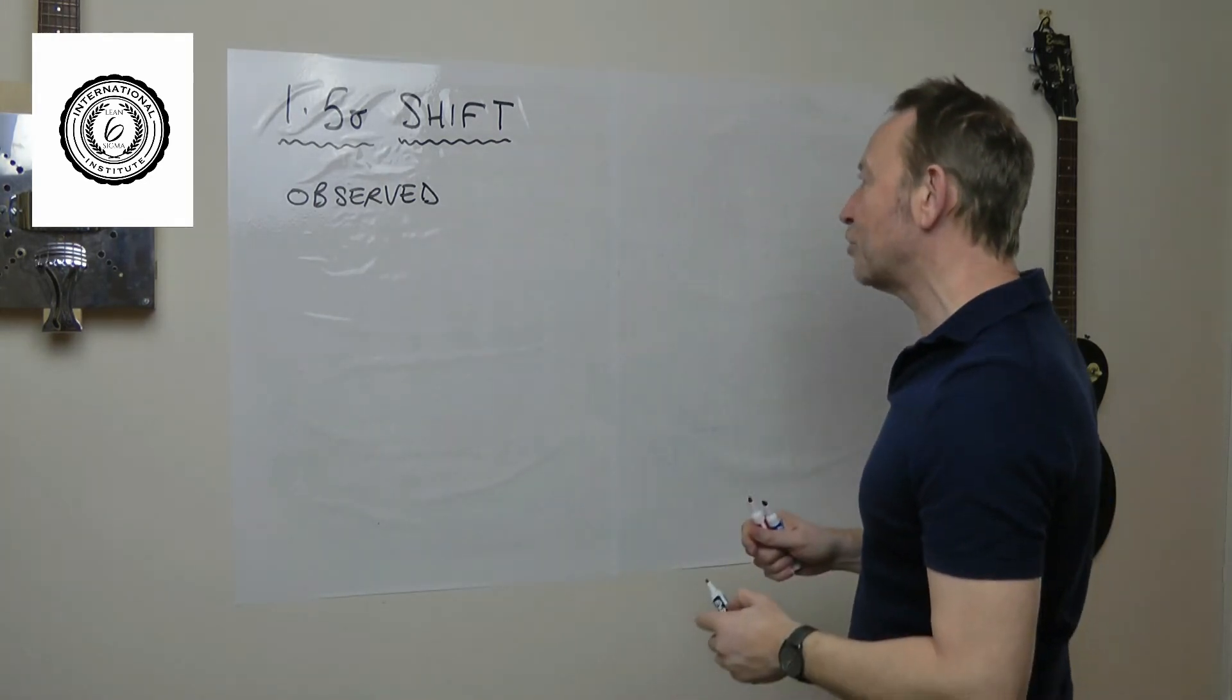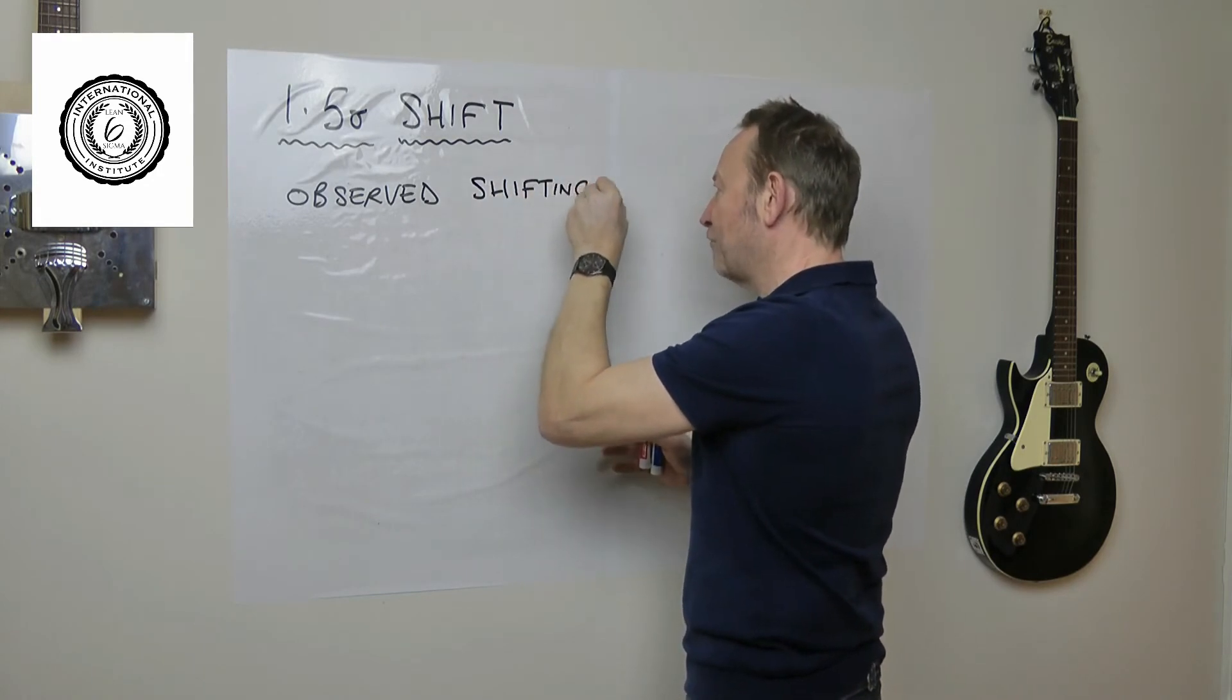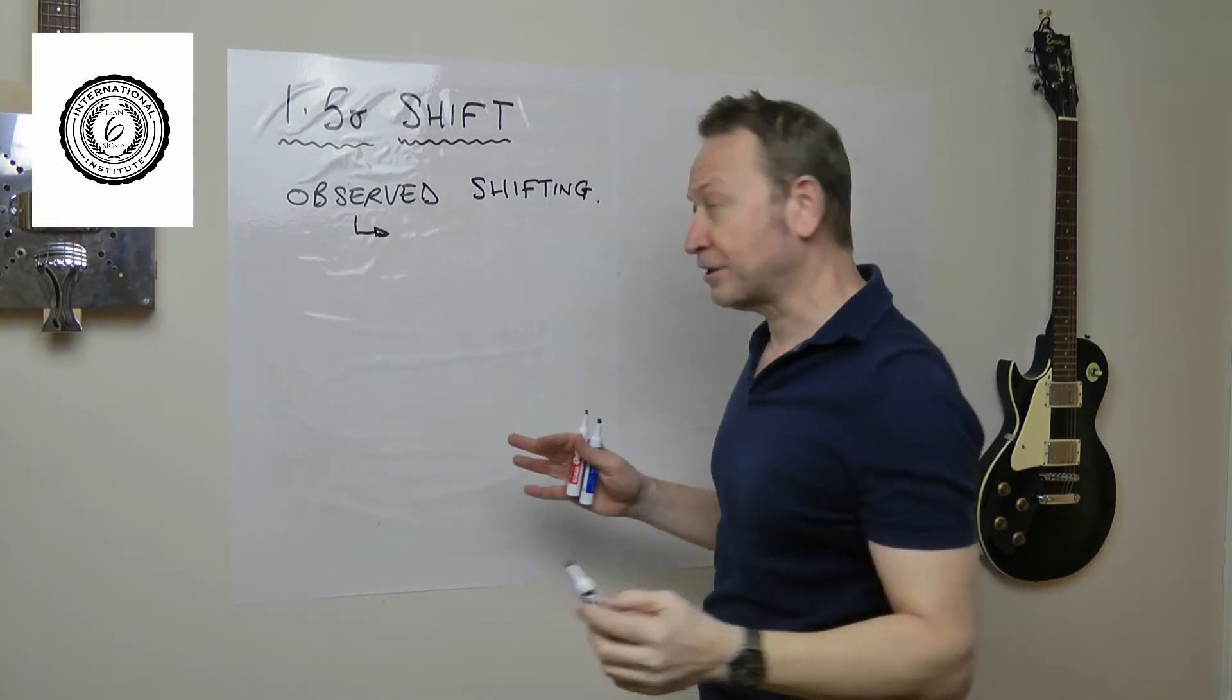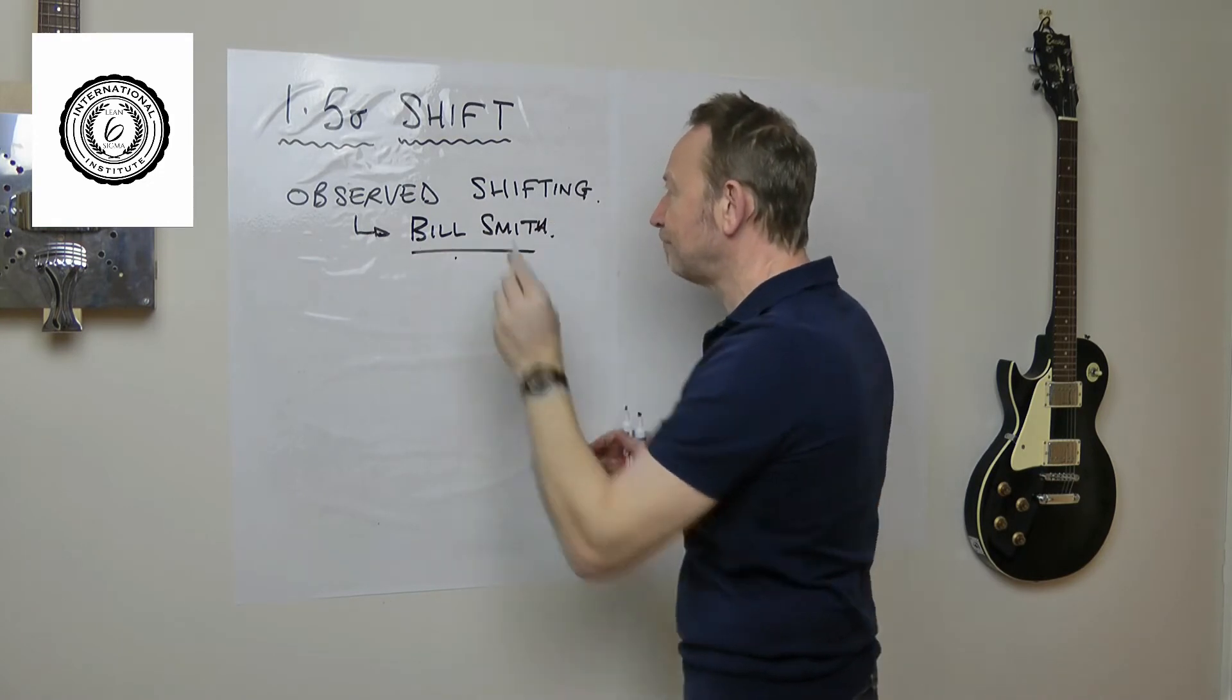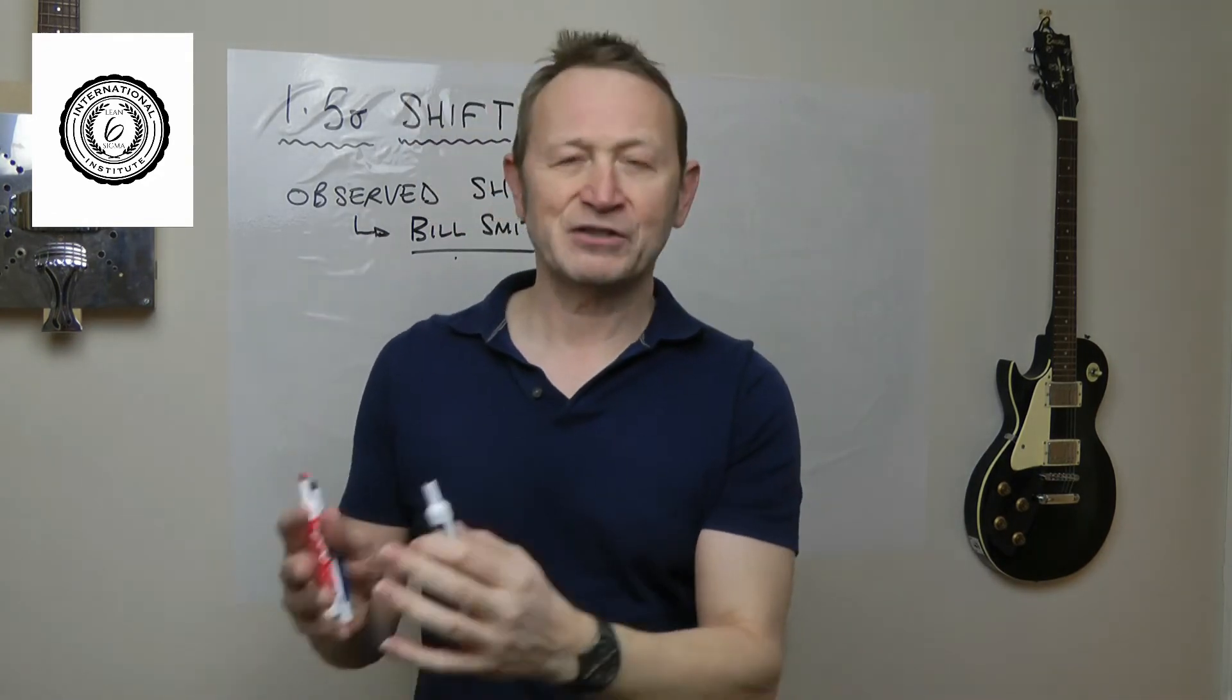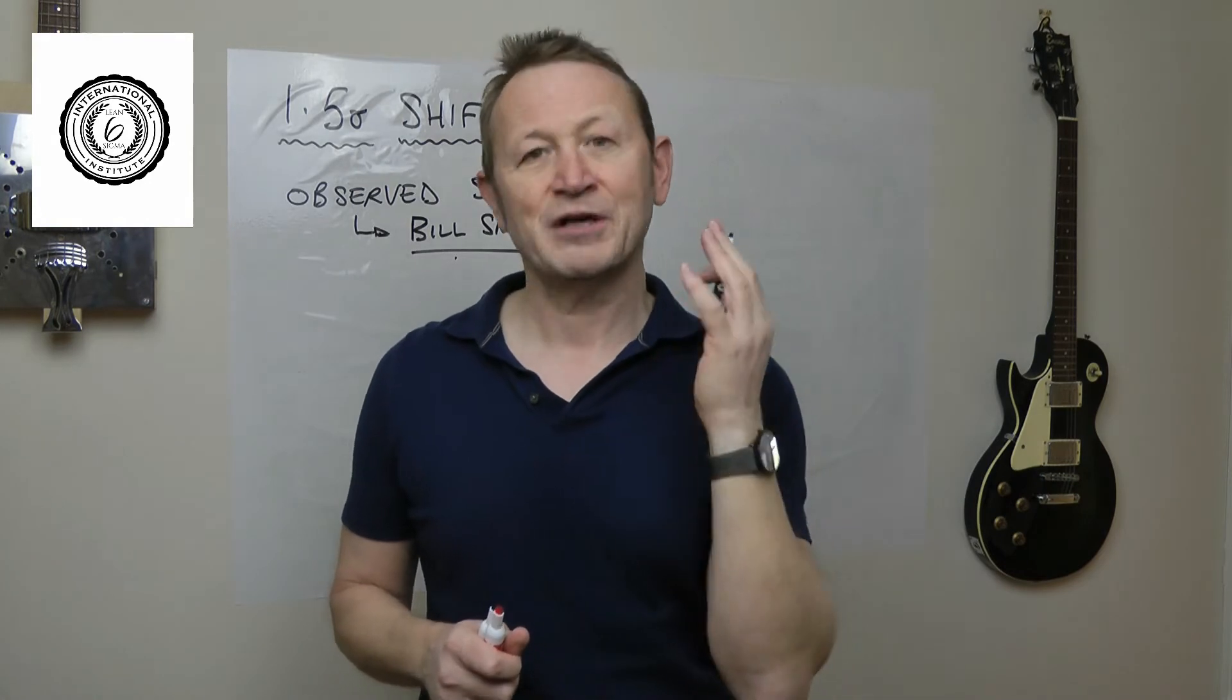They observed the process shifting, or the fact that the process couldn't be centered. The person that observed it was an engineer called Bill Smith. As a result of Bill Smith's observation, that's where the target of a capability of 2 comes from. They want you to have a CP of 2, not necessarily a CPK of 2, but a CP of 2.